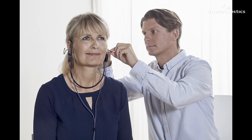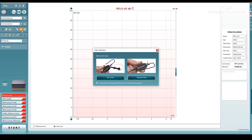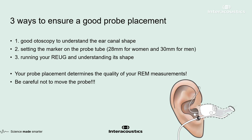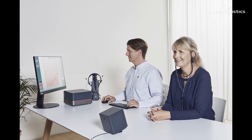Your probe tube is your measurement reference point for your fitting, and correct placement ensures quality measurements. Ahead of placement, run the tube calibration process to ensure your equipment is correctly prepared. You should follow these steps to ensure good probe tube placement: first, perform good otoscopy — ensure you know the shape of the patient's ear canal and observe for any obstacles. You can also perform otoscopy once the tube has been placed to get a better placement after readjustment. Second, move your marker on your probe tube to 28 or 30 millimetres depending on the patient's gender, to ensure you aren't over-inserting the probe. Finally, once the probe is placed, observe your REUG to assess probe placement quality. If you're not within 5 dB of the 0 dB mark at 6 kHz, reassess your probe tube placement.